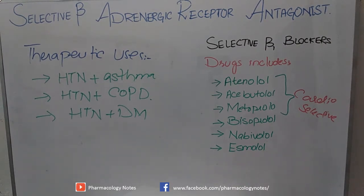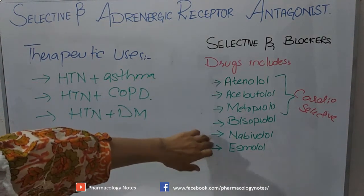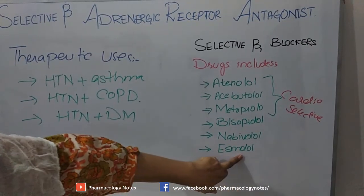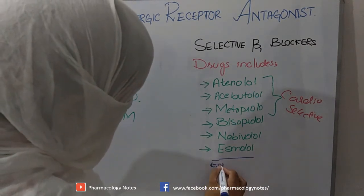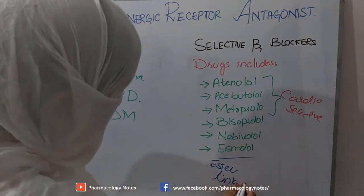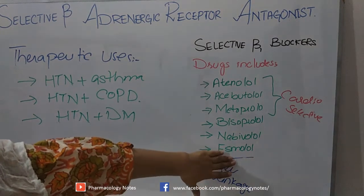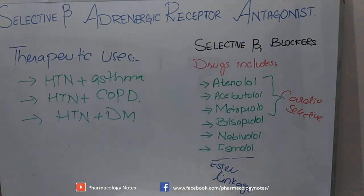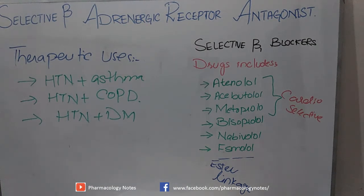To summarize: the beta-1 selective receptor blockers are atenolol, acebutolol, metoprolol, bisoprolol, nebivolol, and esmolol. Among these, esmolol cannot be given orally because it has an ester linkage and is highly degraded by the stomach and first-pass metabolism. Therefore, esmolol is always given intravenously. These drugs are all used in hypertension, asthma, and COPD cases where propranolol cannot be used.